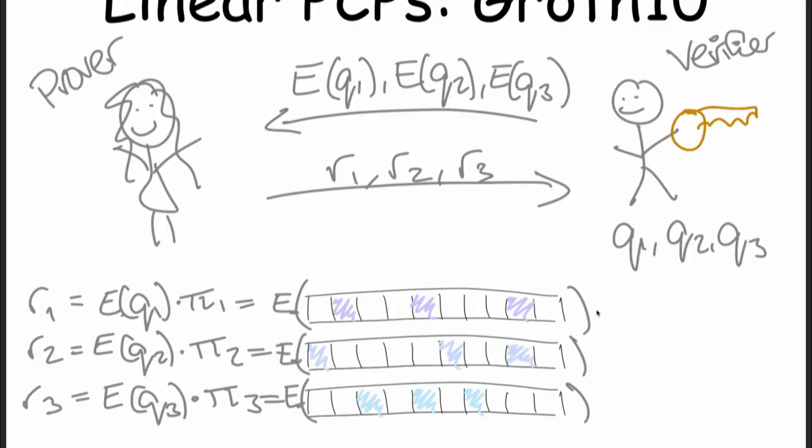What happens if we could send the queries encrypted? In Groth10, in the designated verifier case, the verifier would have a key, encrypt his queries, then send them to the prover. The prover can create the results of these queries — because these are just linear combinations of points of the proof — and this is something you can actually do with certain types of encryption. So the verifier encrypts his queries, the prover does these multiplications with encrypted values and never learns what the queries are.